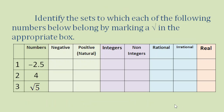Now for our exercises, I prepared here three numbers: negative 2.5, 4, and square root of 5. Identify the sets to which each of the following numbers belong by marking a check in the appropriate box. Let's start with negative 2.5.